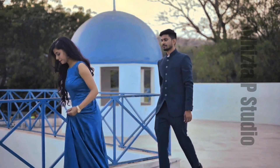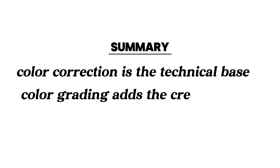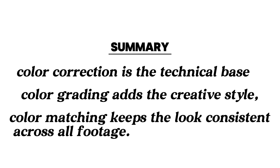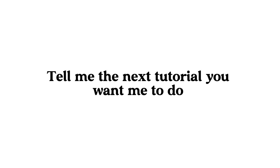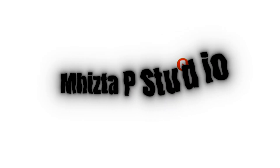In summary: color correction means adjusting a footage or clip to look natural. Color grading is adding vibes and moods to the video — whether you want it to look like it was shot in the evening, at night, or in the morning. Color matching is simply adjusting a footage or clip to have a consistent color. Drop your thoughts in the comment section and tell me the next tutorial you want me to do. Please subscribe to this channel and turn on notifications so you get notified whenever I post a new video.